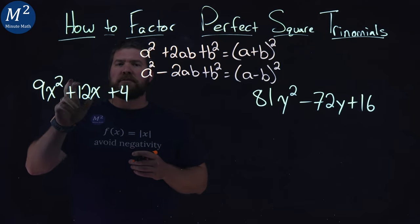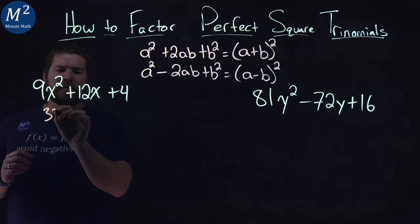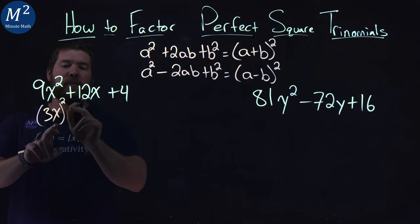Well, 9x² can be written as 3x all squared. 3 squared is 9, x squared is x squared.